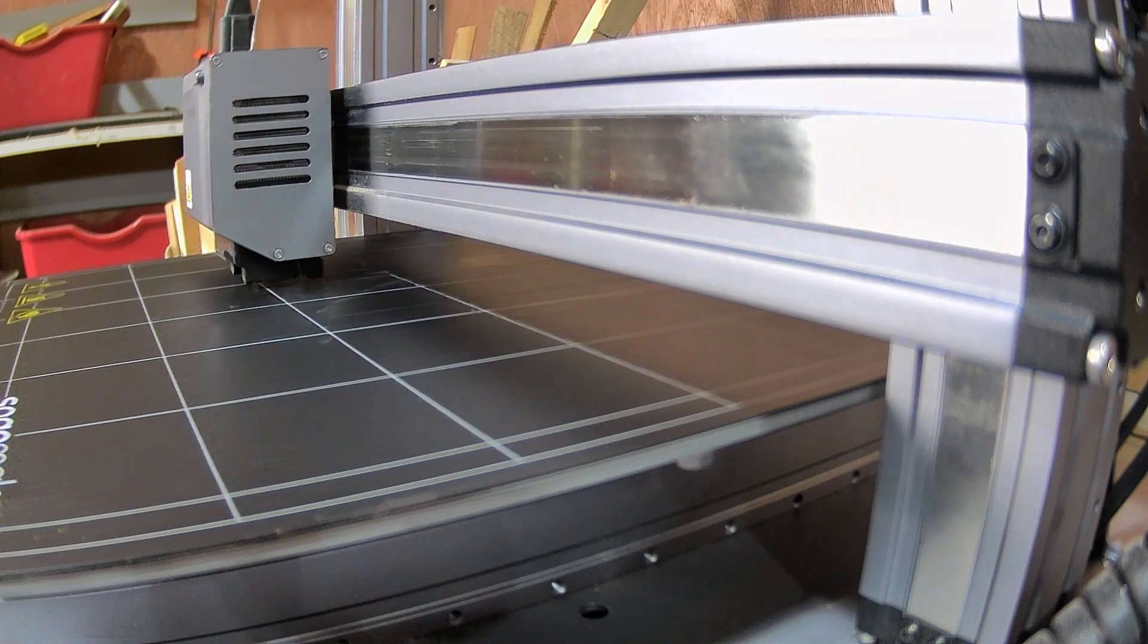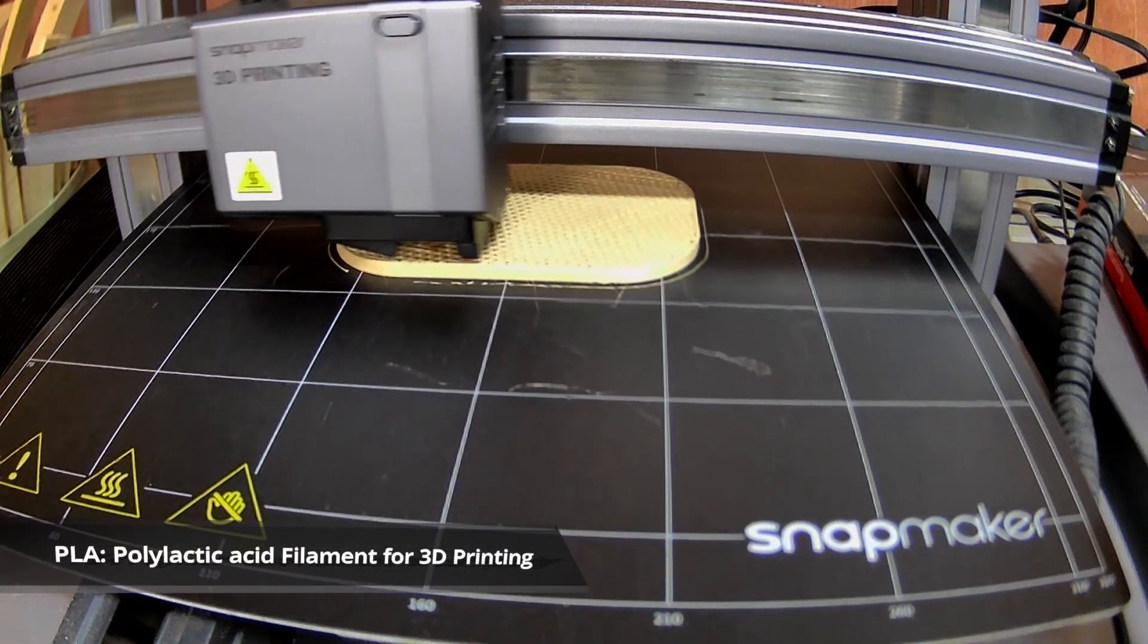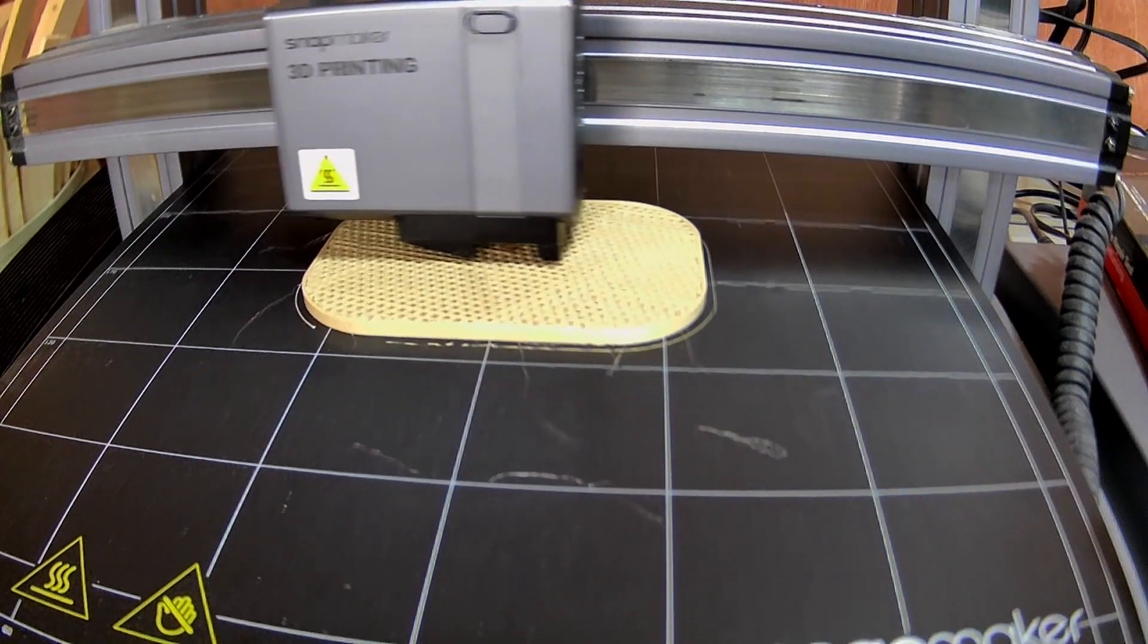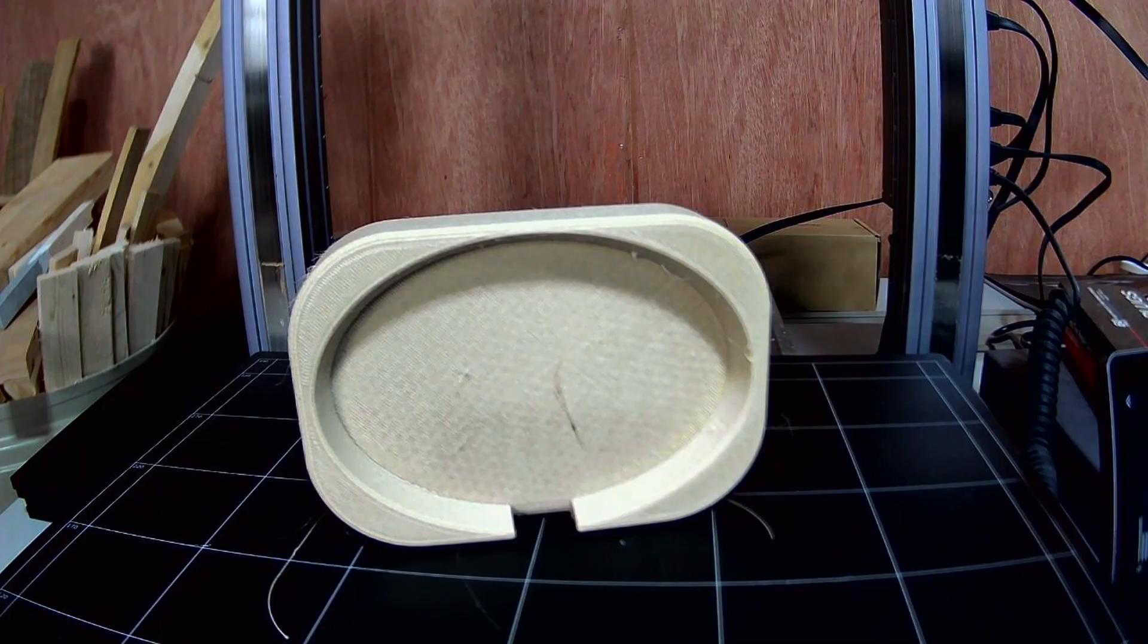I thought it would look better with two colors so I first printed out the base in this wood PLA. This material is really nice to work with and I think it looks really good. The wood PLA can apparently be sanded and stained but I've not tried that yet. I just like how it looks straight off the printer.